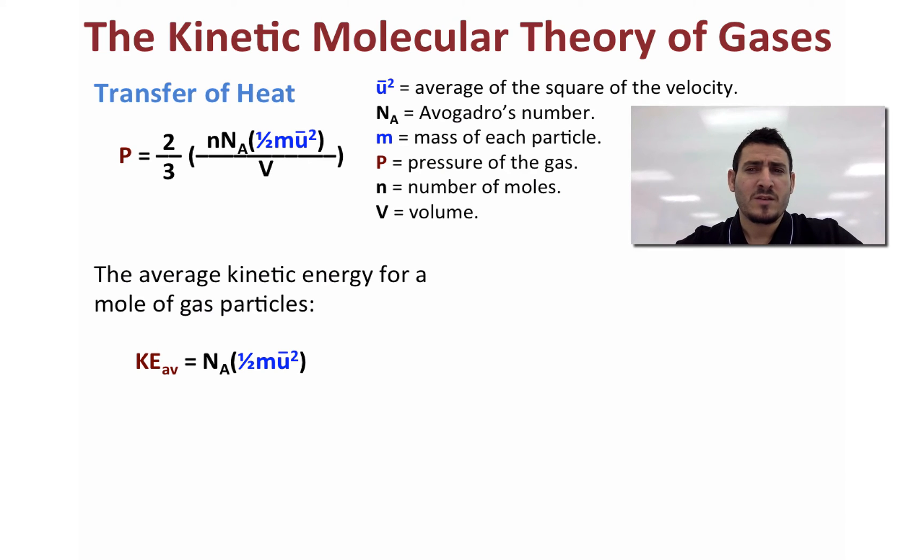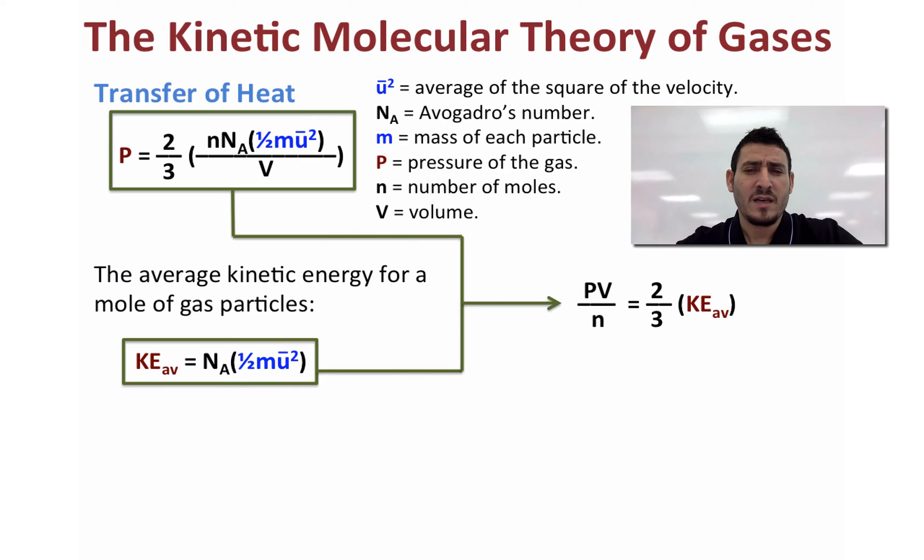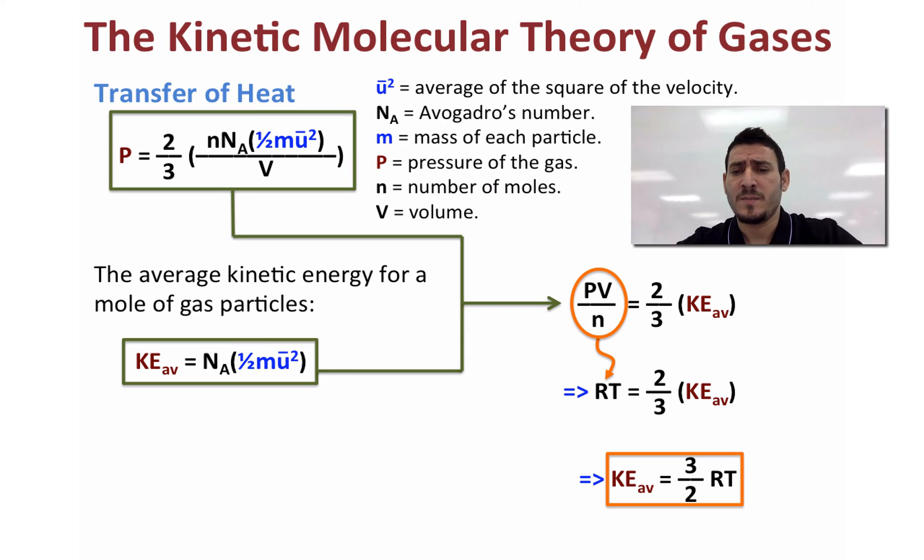So using these two expressions and rearranging them, we can get that PV/n equals 2/3 times the kinetic energy or average kinetic energy. Now remember from the ideal gas law, PV equals nRT, so PV/n is going to be equal to RT. So we can rearrange this expression to be RT equals 2/3 kinetic energy. So the average kinetic energy is going to be equal to 3/2 RT. Now remember, R is a constant, so therefore the only factor that changes the kinetic energy is the temperature.